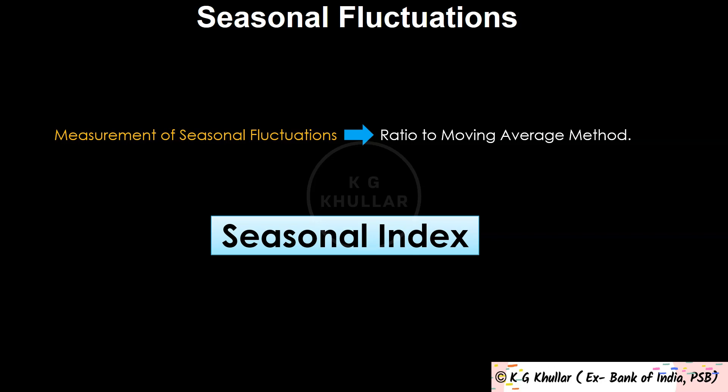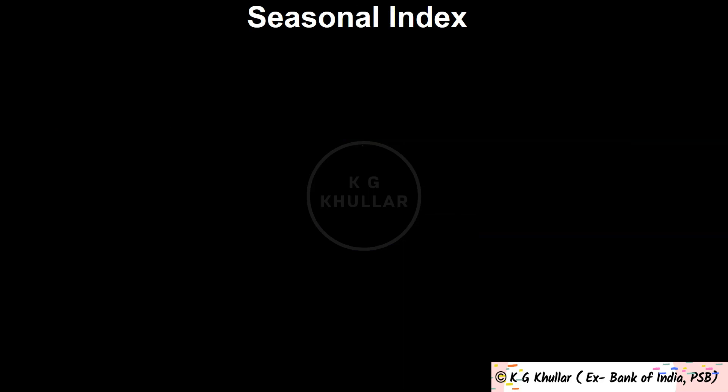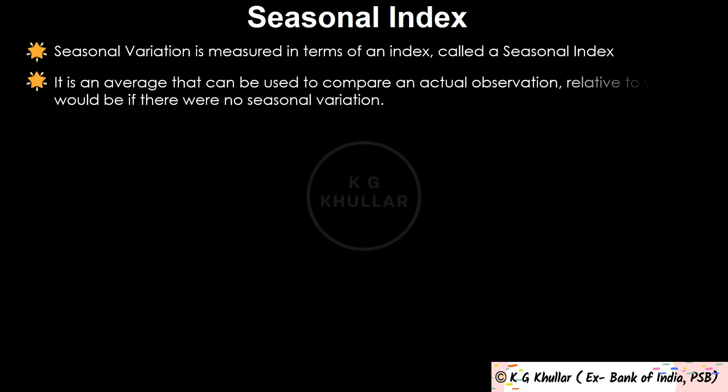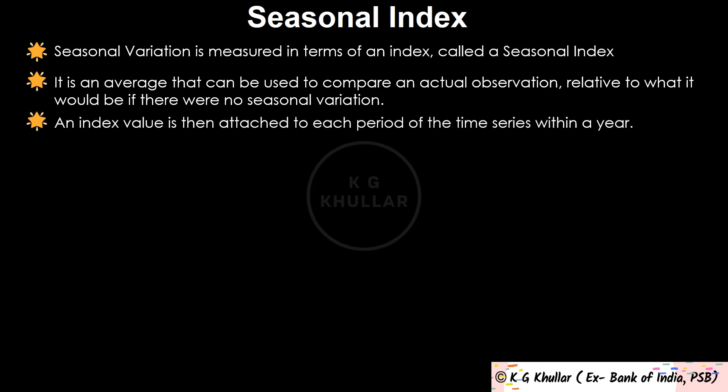Seasonal variation is measured in terms of an index called the seasonal index. It is an average that can be used to compare an actual observation relative to what it would be if there were no seasonal variation. An index value is attached to each period of the time series within a year. For example, if monthly data is considered there will be 12 separate seasonal indices, and if quarterly data is considered there will be 4 separate indices. Seasonal index is usually expressed in terms of percentage.